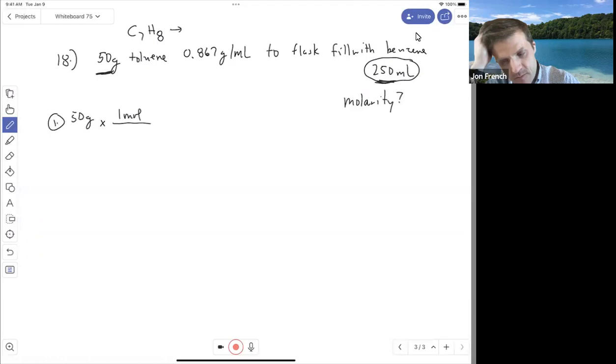So the molar mass - 7 times 14, yeah, 84 plus 8. So the molar mass of toluene is 92 grams per mole.